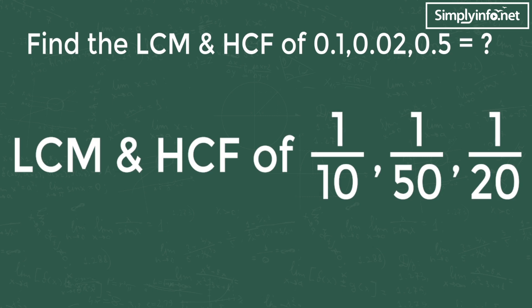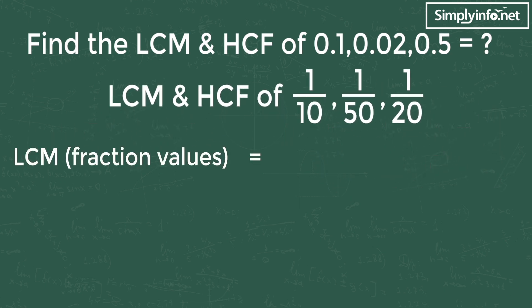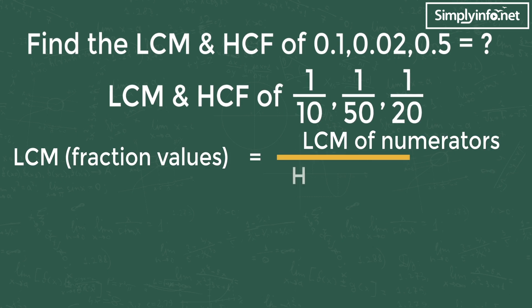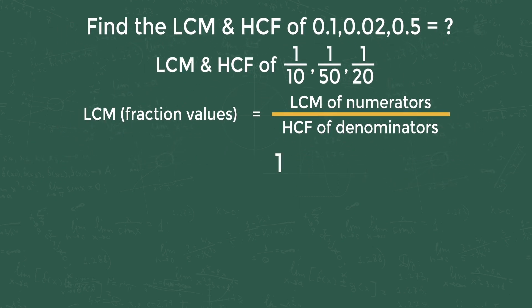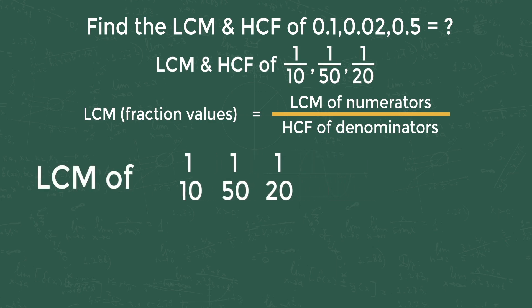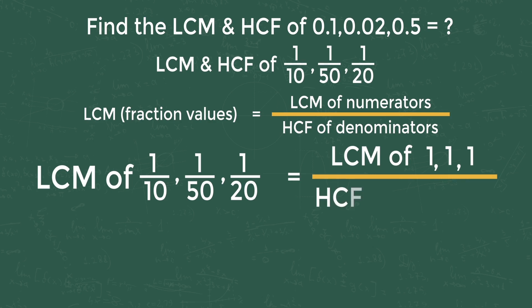For finding the LCM, we use the formula: LCM of fraction values equals LCM of numerators divided by HCF of denominators. In our problem, the numerators are 1, 1, 1 and the denominators are 10, 50, 20. So LCM of 1/10, 1/50, 1/20 equals LCM of (1, 1, 1) divided by HCF of (10, 50, 20).